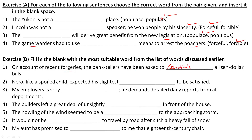The spoiled child expected his slightest dash to be satisfied. The child's mood keeps changing — wanting this, wanting that. For mood swing, the word we learned is 'whim.'